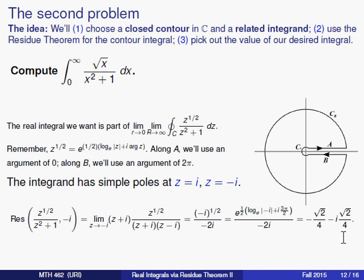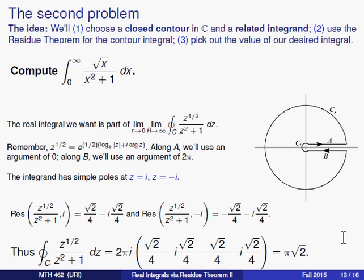Now the residue theorem says that the value of the integral should be 2πi times the sum of those residues, so when we sum them up you'll see that the imaginary parts combine, the real parts cancel each other out, and then when I multiply by the 2πi I end up with a grand total of π over square root of 2, and that is the value of this complex contour integral.